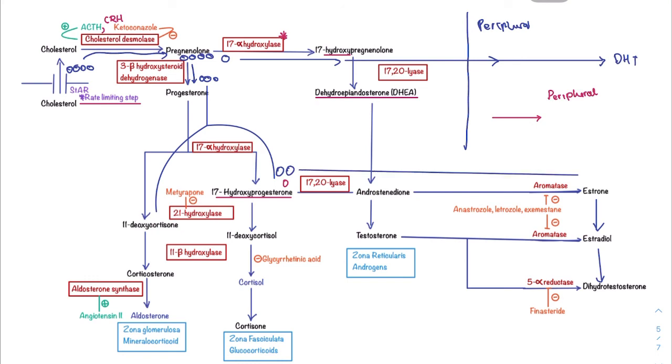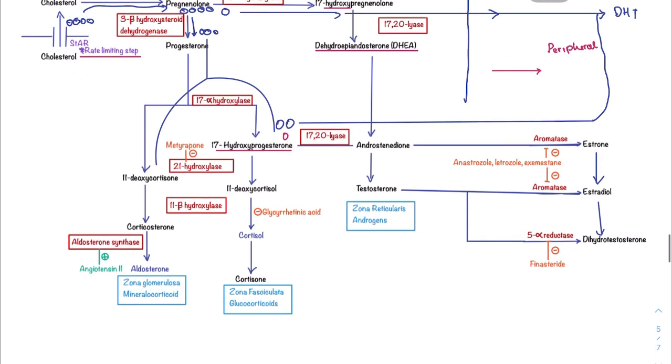The ones that decide to go in the 17-alpha hydroxylase pathway get a choice now. They can either go in the 17-20 lyase route and form DHT, or they can go downwards, parallel to the vehicles that went here. If that's the case, they will pass through several routes including the 21-hydroxylase route, then the 11-hydroxylase route, all the time parallel to the one that comes out as aldosterone.